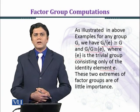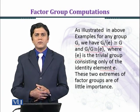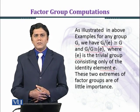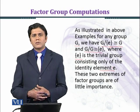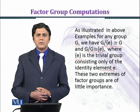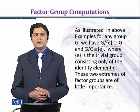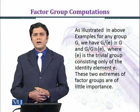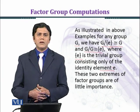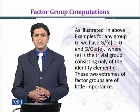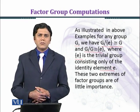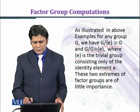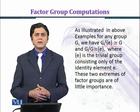In the previous examples we have seen that if you take the quotient G/{G}, the factor group has only one element which is the identity coset. Similarly, if you take G/G the quotient collapses to the identity element.